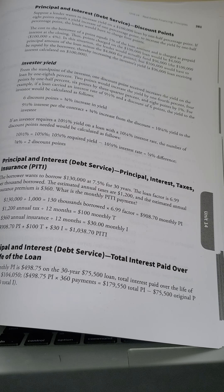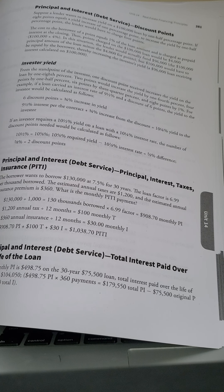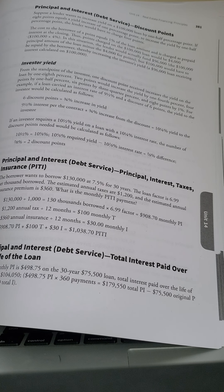That's pretty easy math — $100,000 times four percent. Anytime you're calculating points, you're going to take the number of points as a percentage times the loan amount, and that'll give you the cost. Any questions?